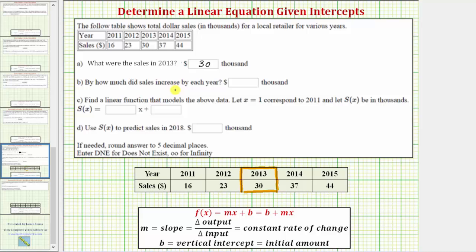Next, we're asked by how much did sales increase by each year? So looking at the table, we first need to recognize that looking at the first row, the years all along the first row increased by one. So if we can determine the increase in the second row, we can determine how much sales increased by each year.